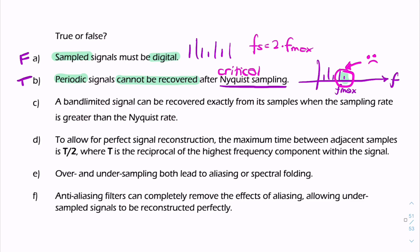Statement c: a band-limited signal can be recovered exactly from its samples when the sampling rate is greater than the Nyquist rate. Band-limited means we have a limited frequency, some value of frequency f max. And if you were to sample that, or over-sample that, then it would be possible to recover the original message. So they can be recovered.